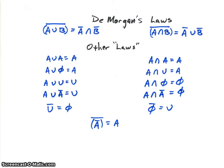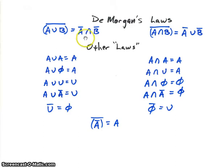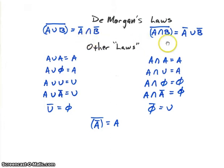There are several other laws derivable from the ones we've looked at. The first is DeMorgan's Laws, which use the not operator. The not of (A union B) equals A-not intersected with B-not. Notice that the not over the whole quantity becomes individual nots, and union becomes intersect. Dually, the not of (A intersect B) equals A-not union B-not.